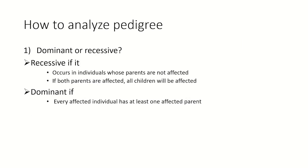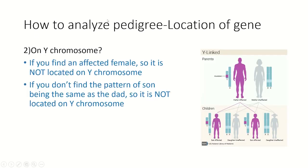Now we will take an example and see how to analyze a pedigree. The first thing we ask is whether the trait is dominant or recessive. It's recessive if it occurs in individuals whose parents are not affected, and dominant if every affected individual has at least one affected parent.